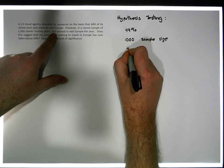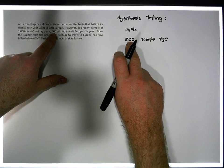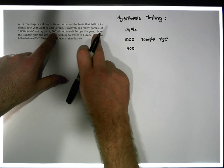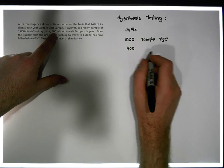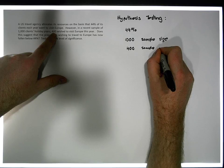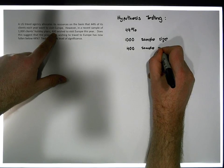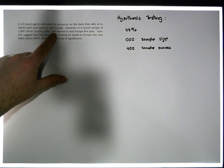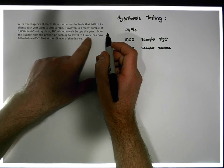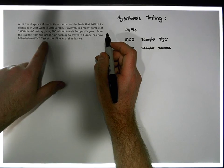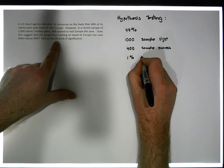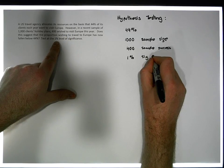In a sample of 1,000 clients, 400, there's my other number, so this is the number of favourables, the number of successes out of the sample that wish to travel to Europe. So these are my sample successes. Then it says, does this suggest that the proportion wishing to travel to Europe has fallen below 44%? Test at the 1% level of significance. So we have another percentage here, 1%, this is my significance level.